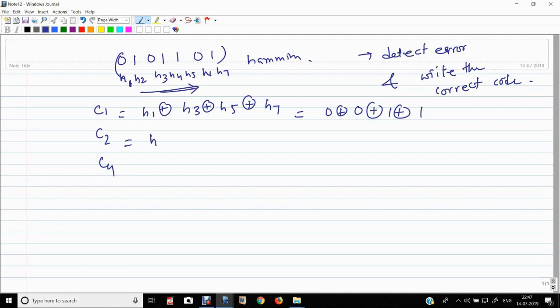So, this will be H2. So, this will be 0 plus 0 plus 1 plus 1 equals 0.